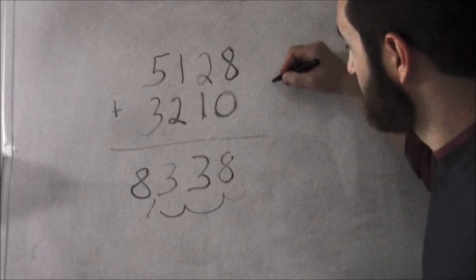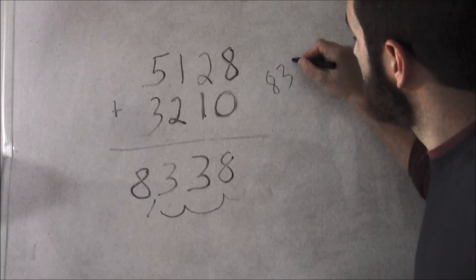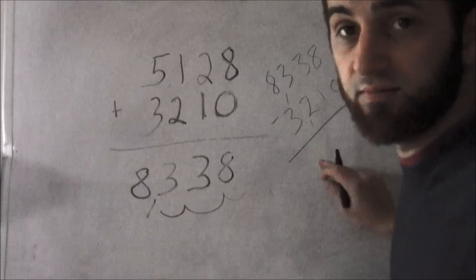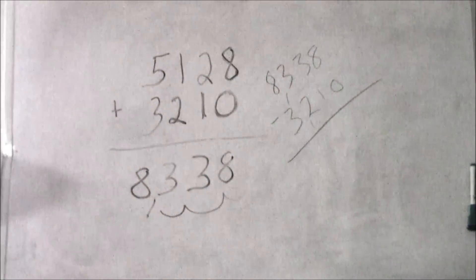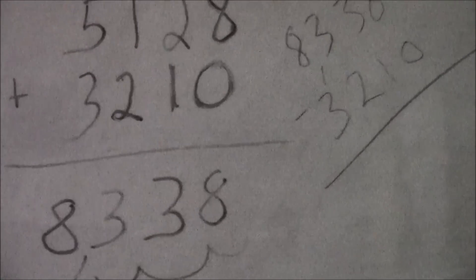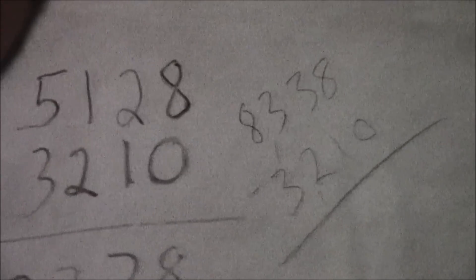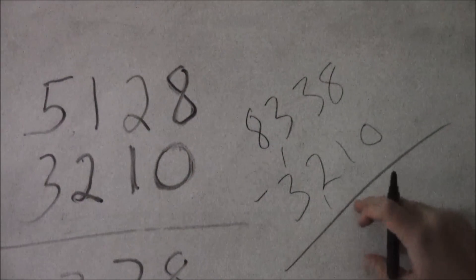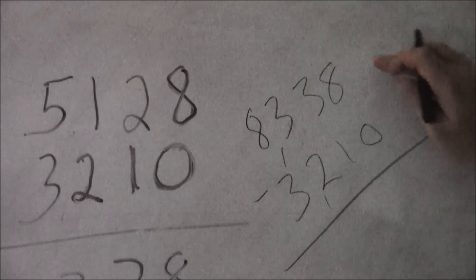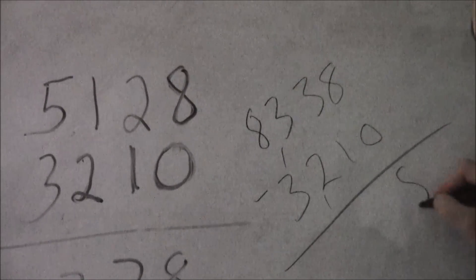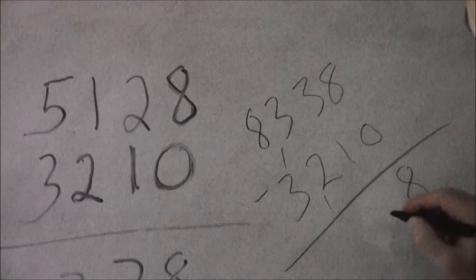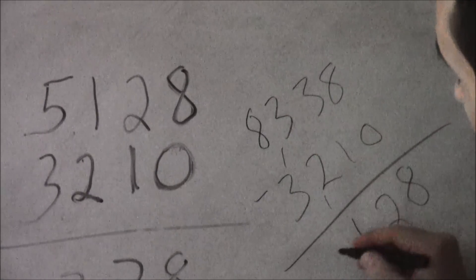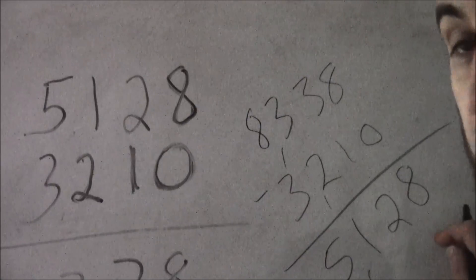Let's do it over here: eight thousand three hundred and thirty eight minus three thousand two hundred and ten. Let's zoom in over there — move the camera a little bit. All right, perfect. Eight thousand three hundred and thirty eight minus three thousand two hundred and ten. Eight minus zero is eight, three minus one is two, three minus two is one, and eight minus three is five.